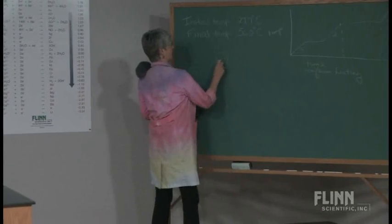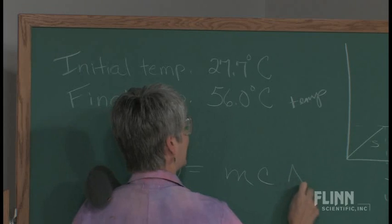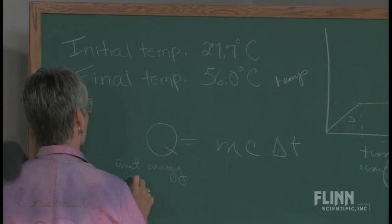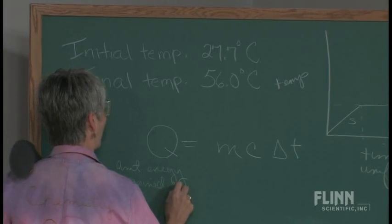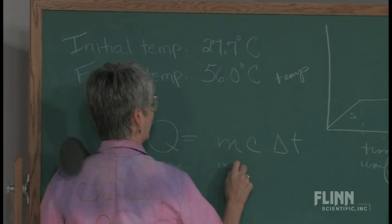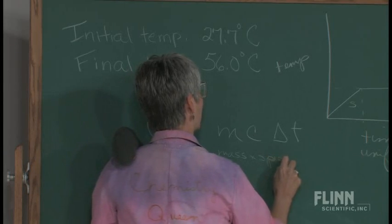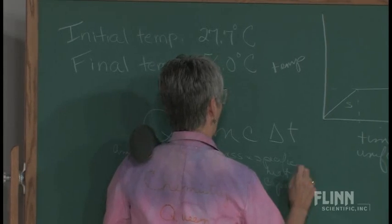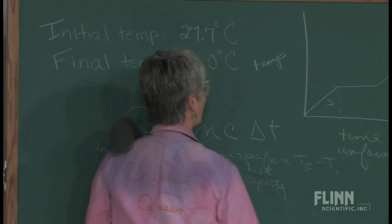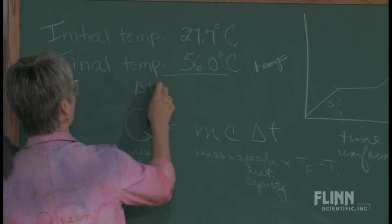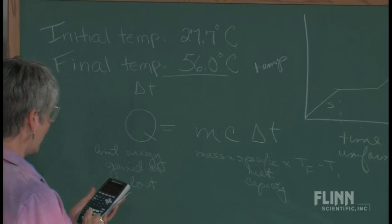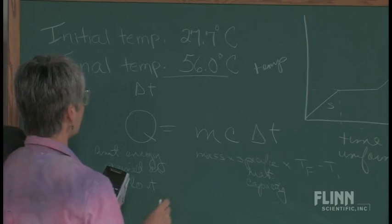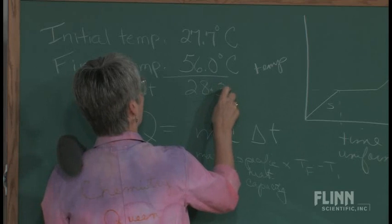In order to measure, I need to use Q equals MC delta T. So I tell the kids, this is the amount of energy gained or lost times the mass times the specific heat capacity and times the difference in temperature, the final minus the initial temperature. So doing a little bit of math here, I've got 56 minus 27.7, and I've got a temperature change here of 28.3 degrees Celsius.